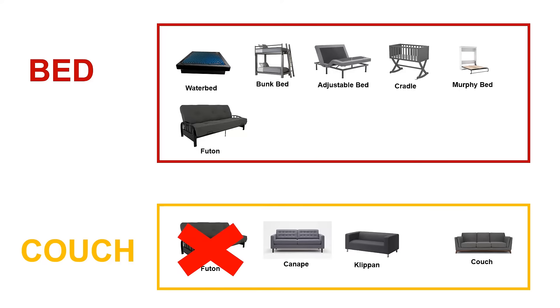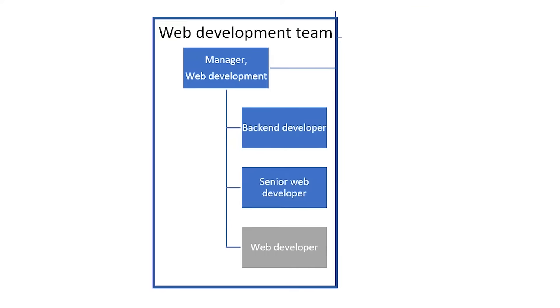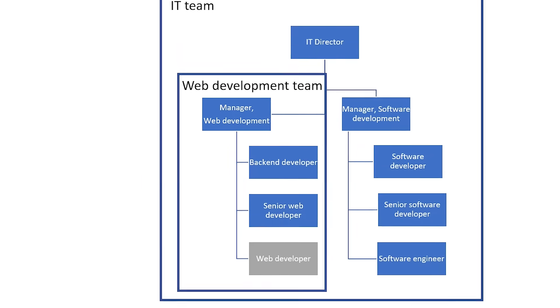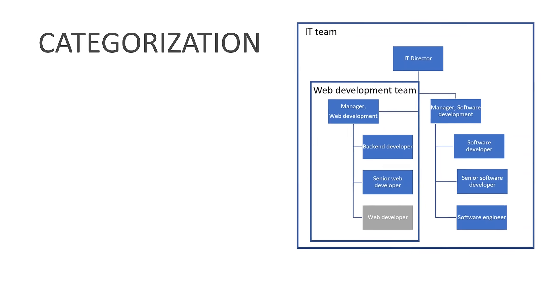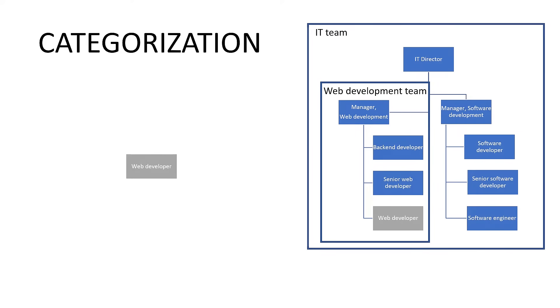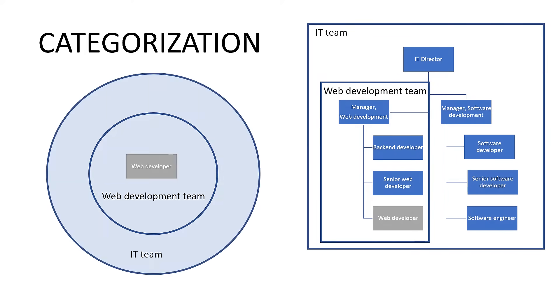But under data classification, it would just have to go under one or the other. Let's look at another real-world example: a company hierarchy, and where we would place a web developer within the organization. Let's place the web developer in the web development team, and then place that web development team as part of IT. So this follows a hierarchy — web development team, IT. Is this a categorization or classification? It's a categorization, because we can equally say that the web developer is part of the web development team and also part of IT. In a way, they are in two places at once — and remember, data classification can only be part of one; they're mutually exclusive.